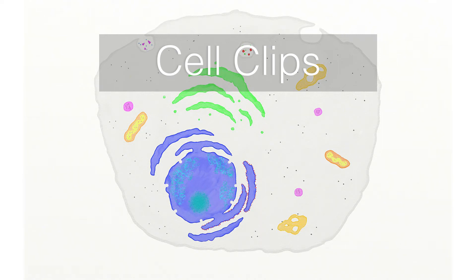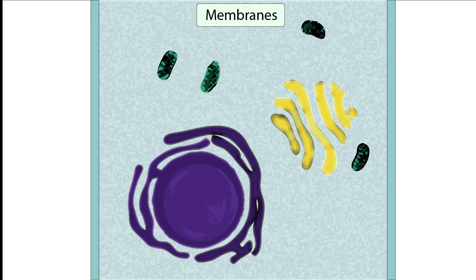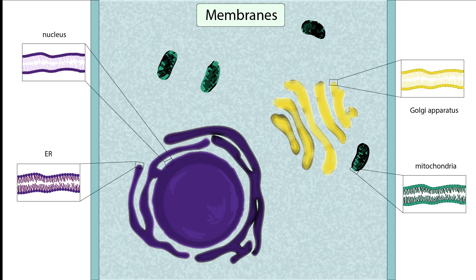Welcome to Cell Clips. In this video, we will be talking about membranes. These structures are important for cell organization because they create barriers around the cell and each of its organelles, including the mitochondria,